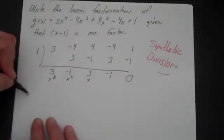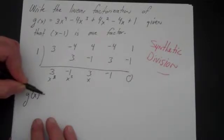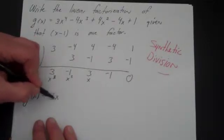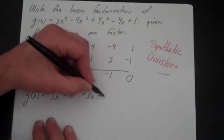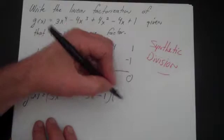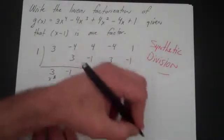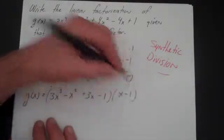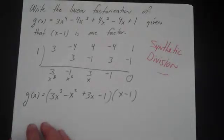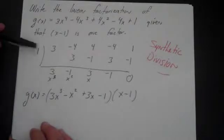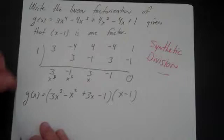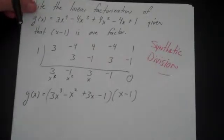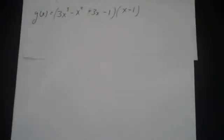So I can write in factored form: g(x) = (3x³ - x² + 3x - 1)(x - 1). If you need help with synthetic division, you can watch that video. You could have also used polynomial long division here — it wouldn't matter. So let's move this up so we have a little bit more space.